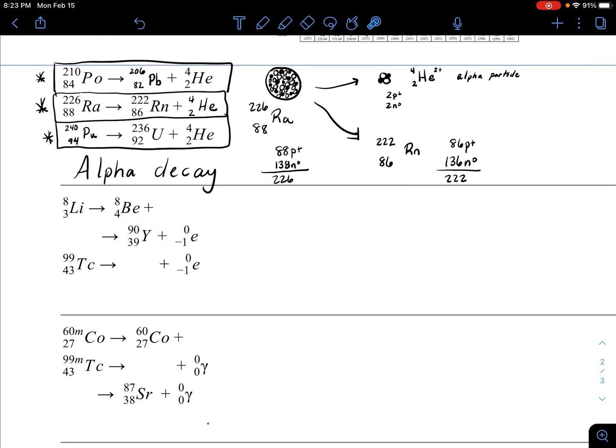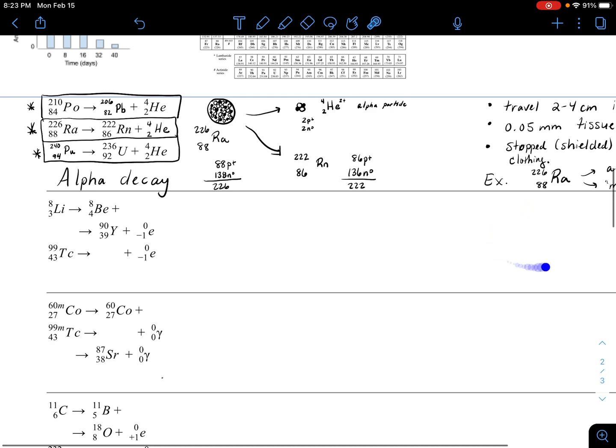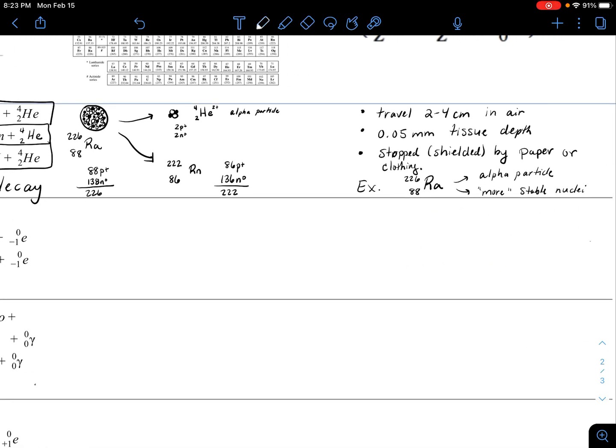Beta decay on the inside will have three specific practice problems that we're going to go over. You'll have room to draw a particulate view of what the nuclei look like in beta decay, and some extra notes about how far it can travel in air and how it can be shielded.